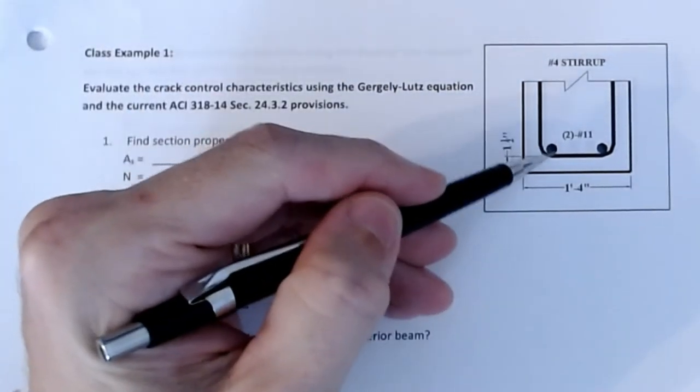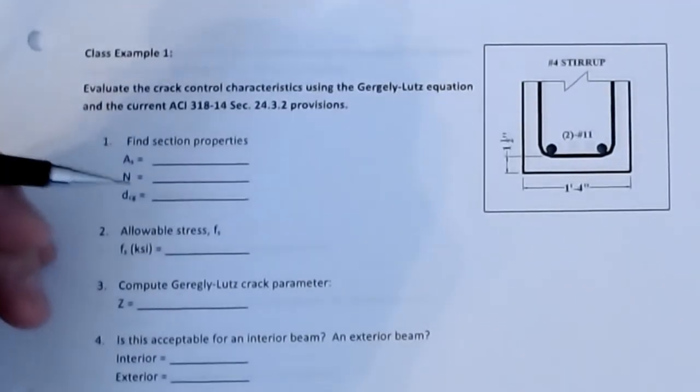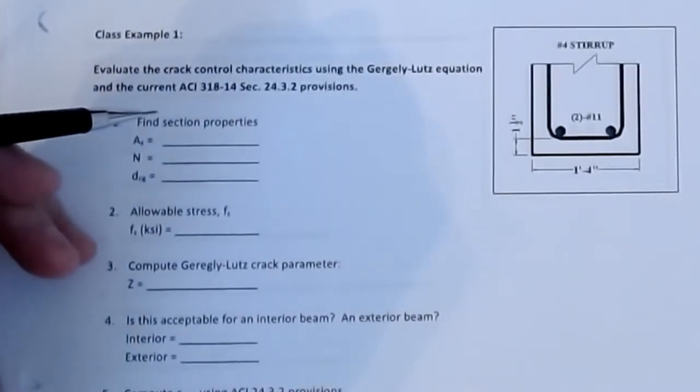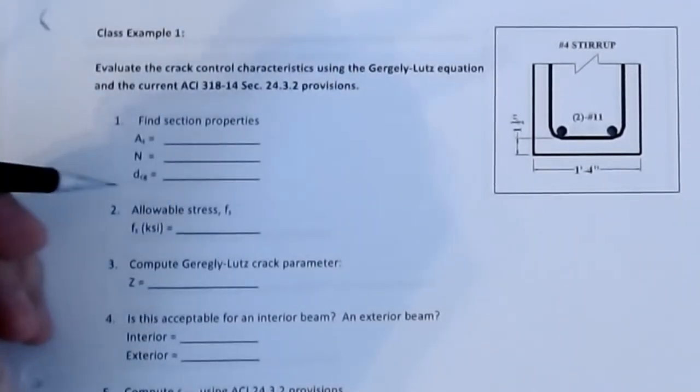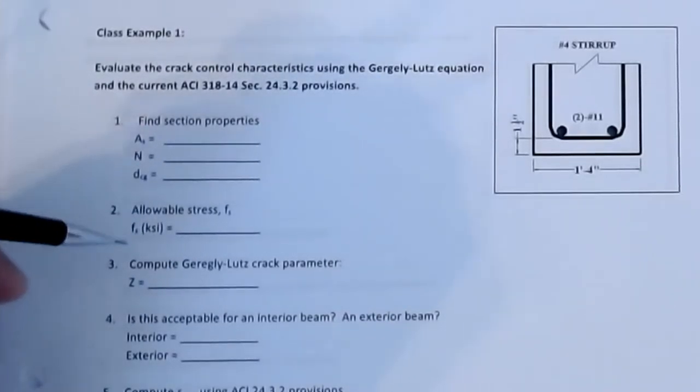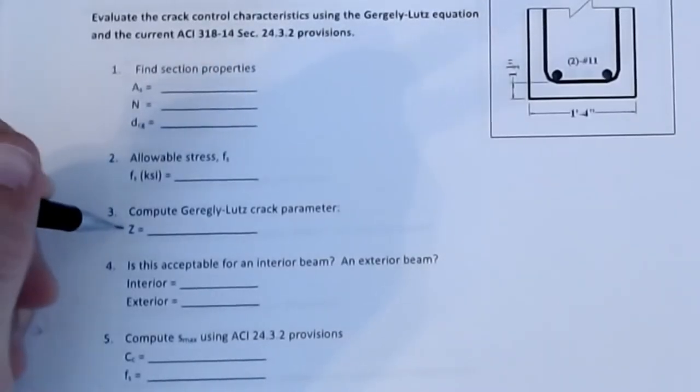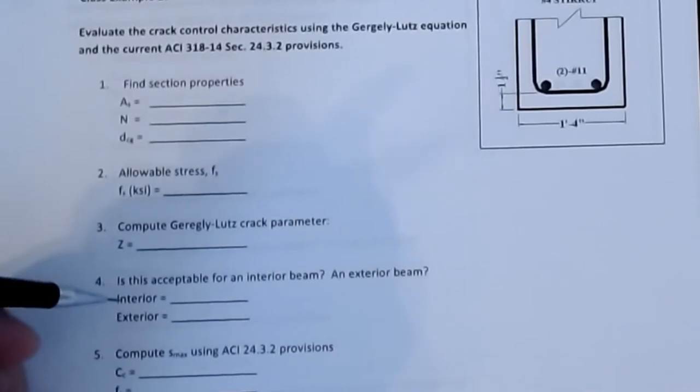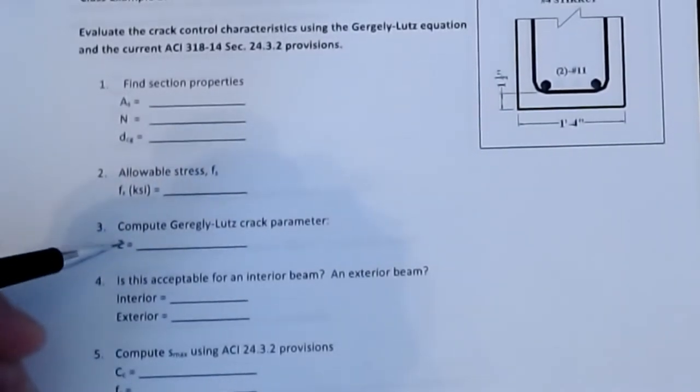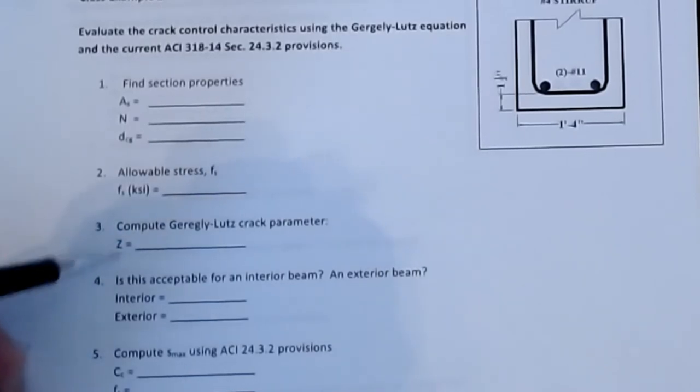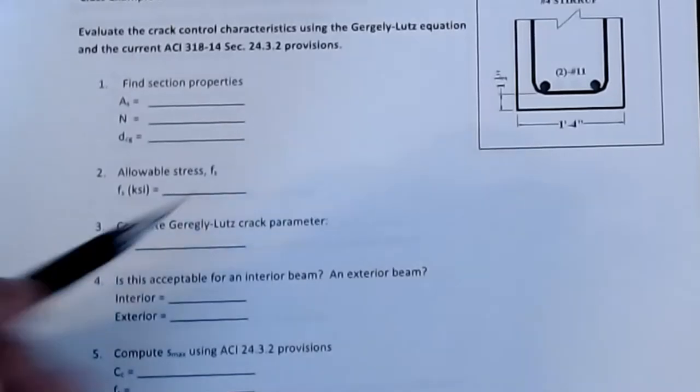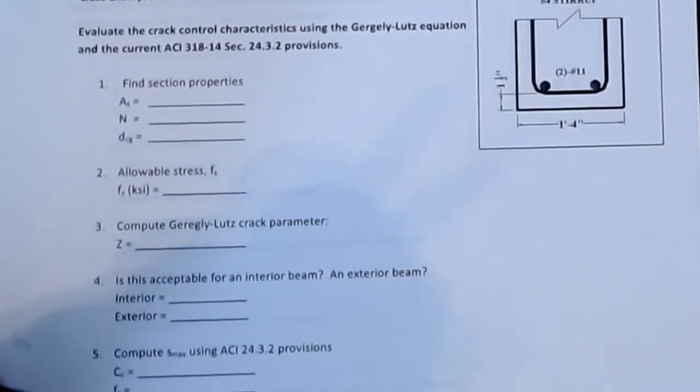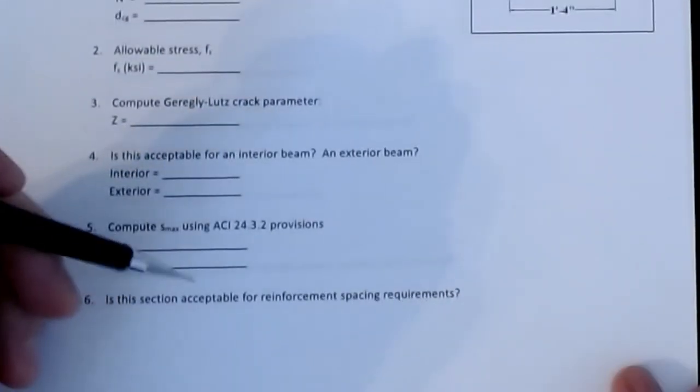First thing that we're going to do is I've got a couple of different examples for bar distributions on here, so for the first one, I have a cross-section that is 16 inches wide, it has a DC dimension of one and a half inches, and we're looking at putting two number 11 bars in this for flexure, and we're going to evaluate the characteristics of cracking based off of this Gergely-Lutz methodology. You're going to calculate the area of steel, look at the number of bars, locate the centroid, and we're going to compute the allowable stress. Calculate your Gergely-Lutz criteria, and then ask yourself, is this acceptable.